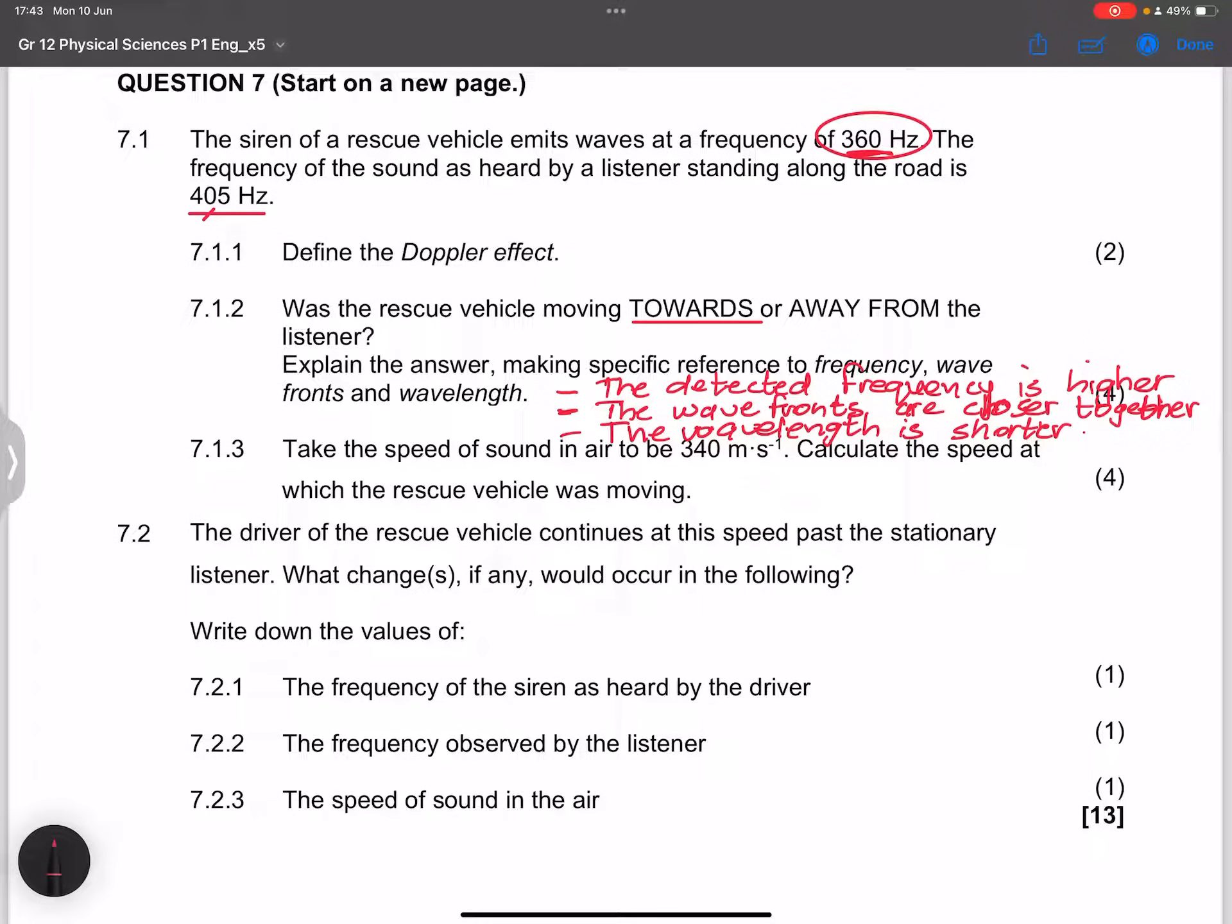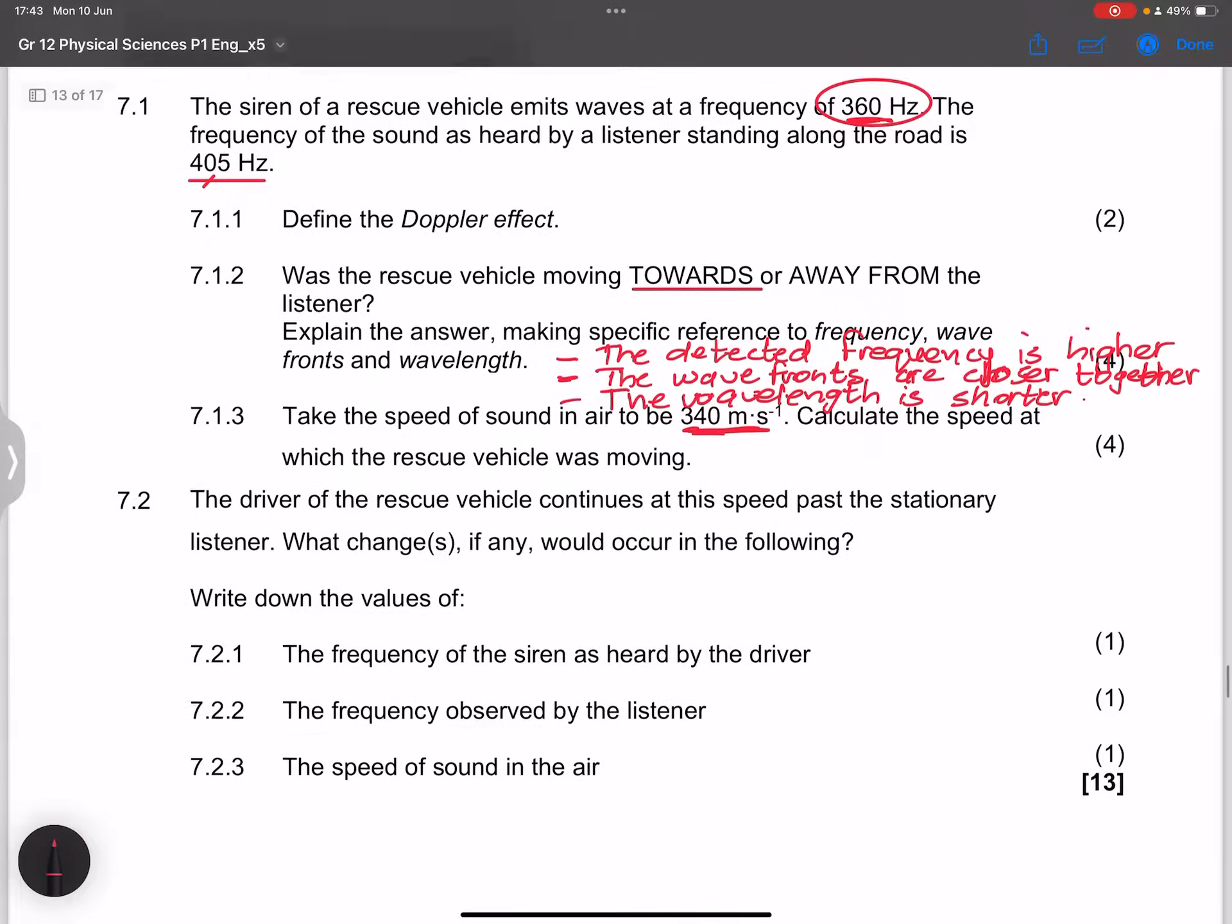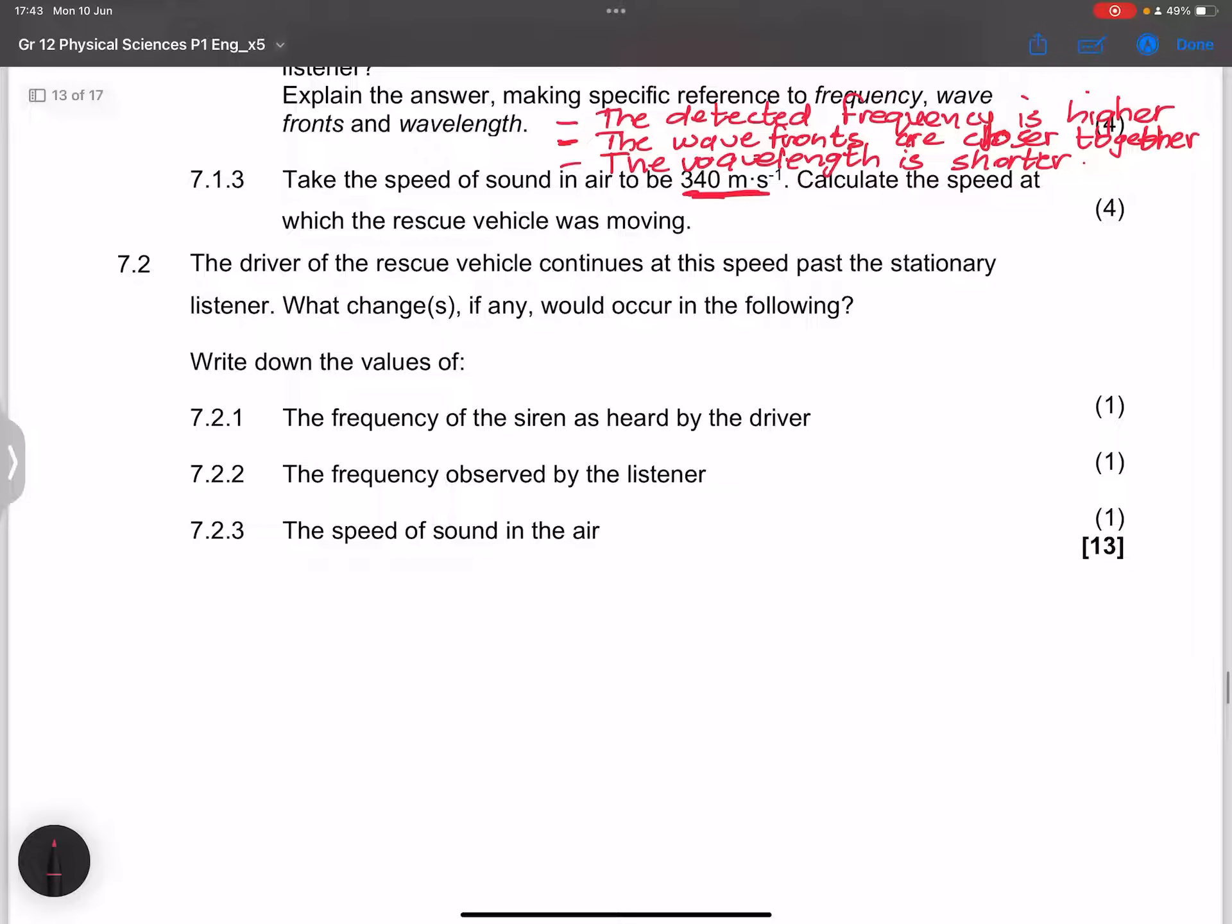Now, they said to us, take the speed of sound in air to be 340. And they say calculate the speed at which the rescue vehicle was moving. So we know we're going to use the Doppler effect there. So that's V plus minus VL.